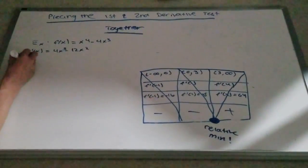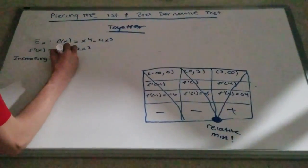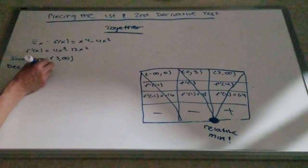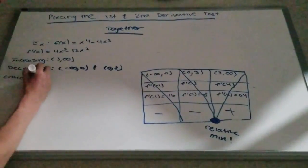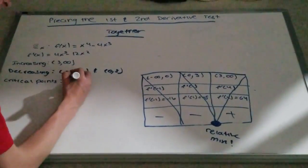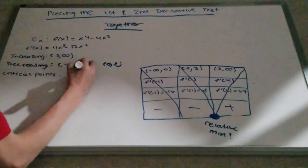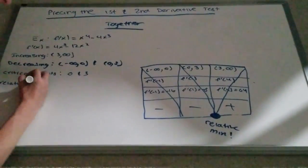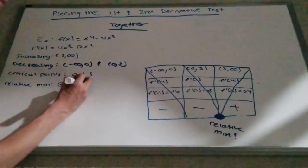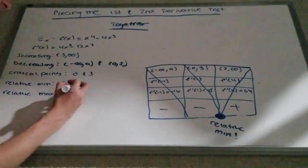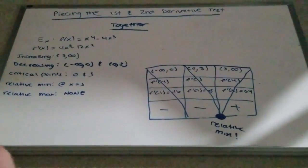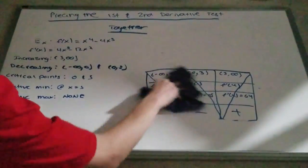The first interval is negative, the second interval is negative, and the third interval is positive. When it goes from negative to positive, it means there is a relative minimum.